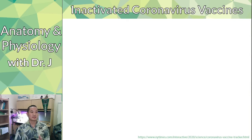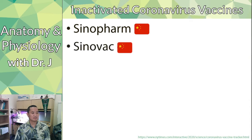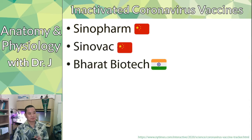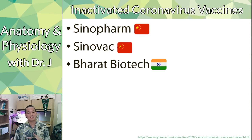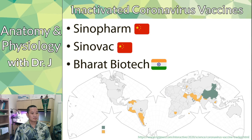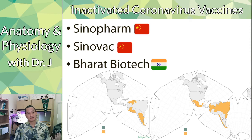Some coronavirus vaccines actually use this same principle — inactivated coronavirus vaccines. Examples include Sinopharm and Sinovac from China, and Bharat Biotech from India. This technology isn't new — Jonas Salk was doing this 50 to 70 years ago. You don't need extensive resources to make an inactivated coronavirus vaccine. You may not have heard of these vaccines because they aren't yet approved in the US and many western countries.